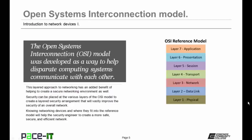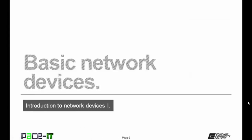Security can be placed at the various levels of the OSI model to create a layered security arrangement that will vastly improve the security of an overall network. Knowing networking devices and where they fit into the reference model will help the security engineer to create a more safe, secure, and efficient network. With that covered, let's move on to basic network devices.